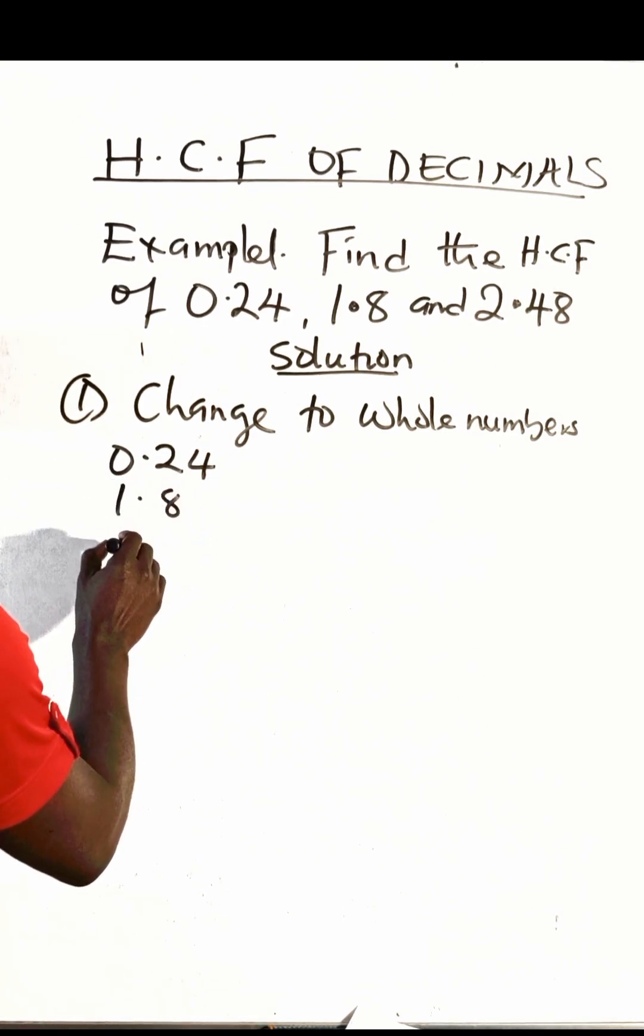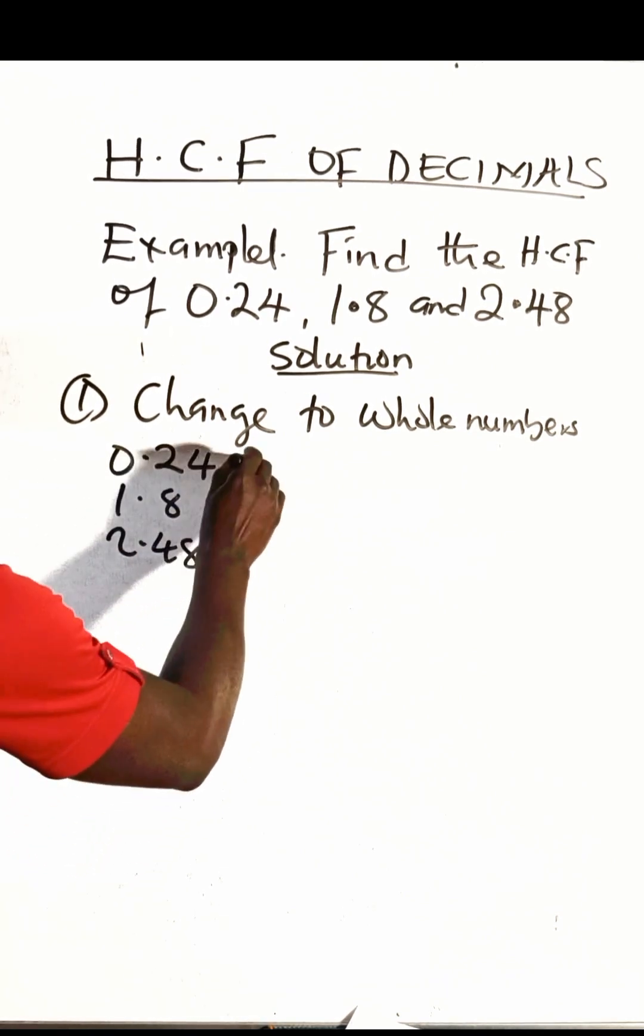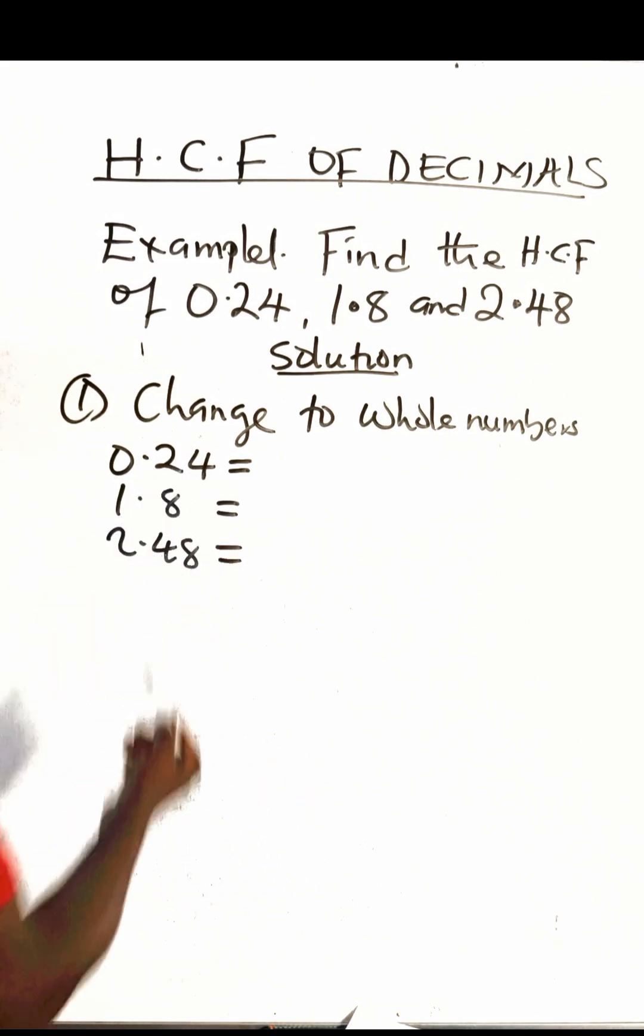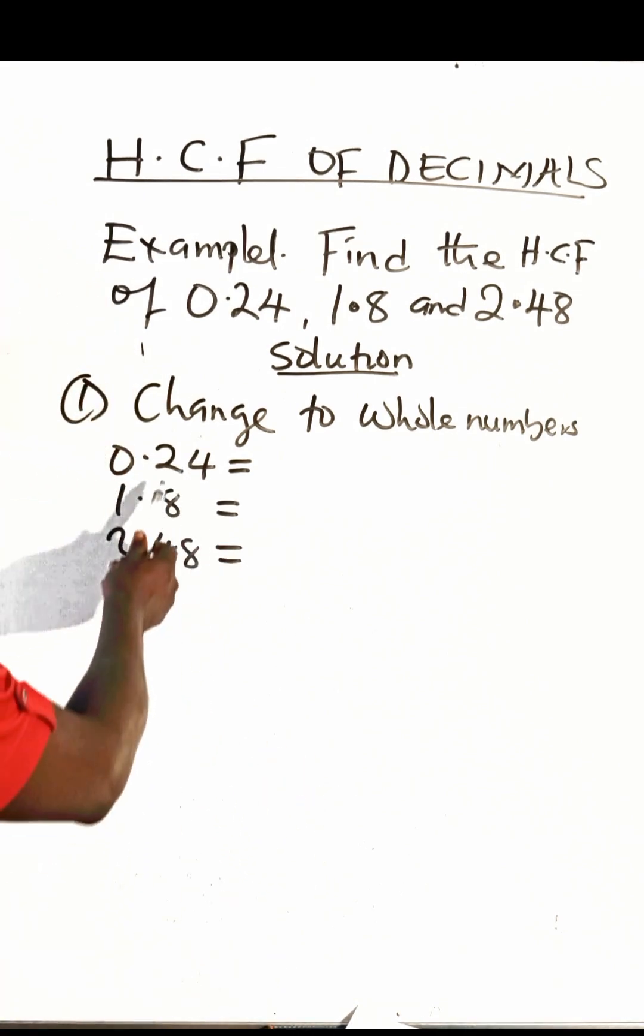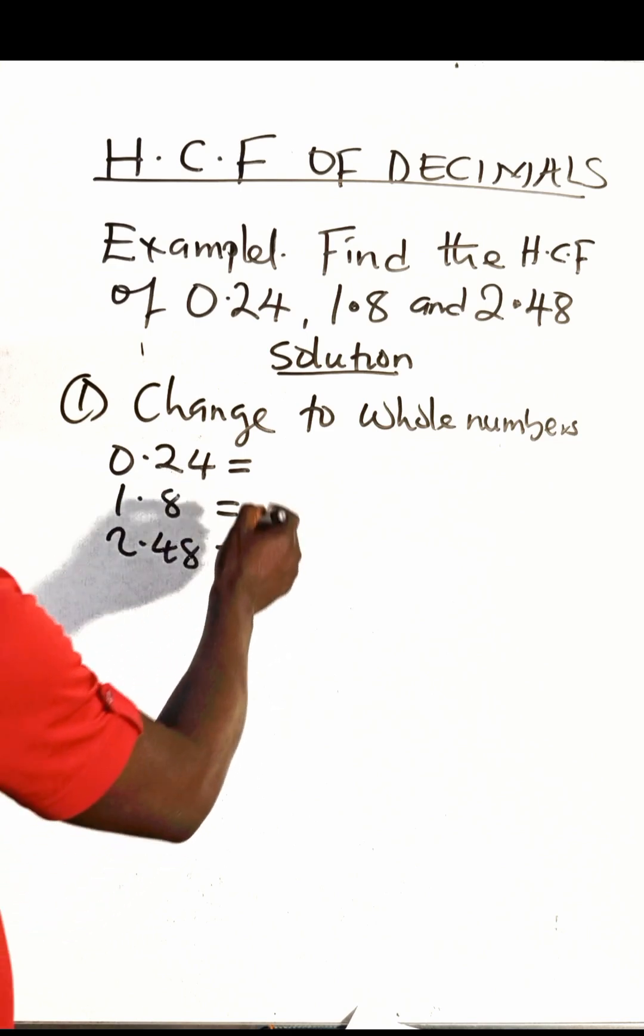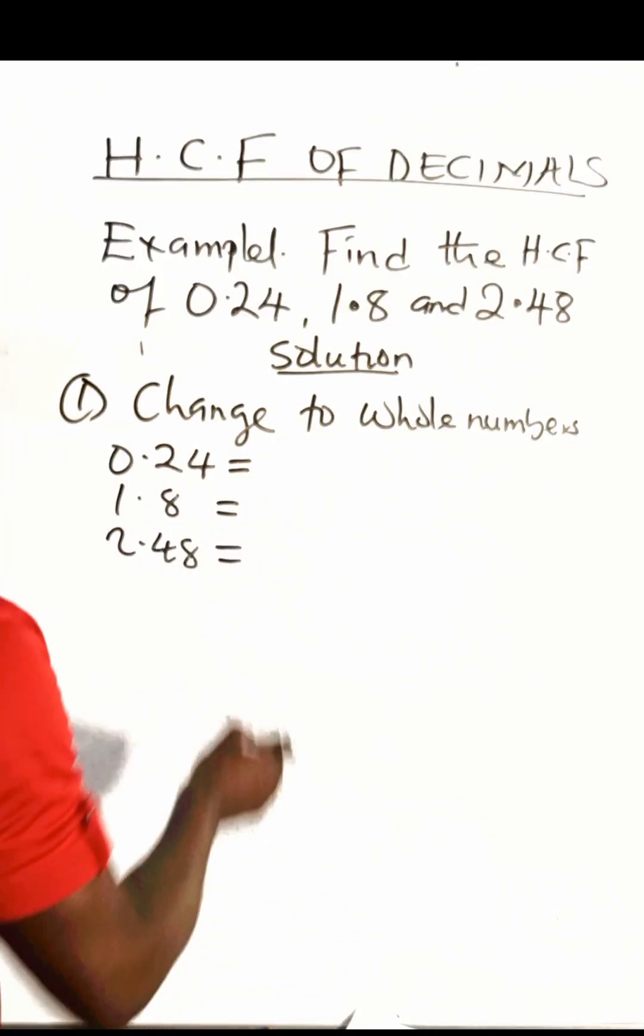How do we change them to whole numbers? By considering the highest decimal places. The highest decimal places is two decimal places, so that means we should multiply by 100.